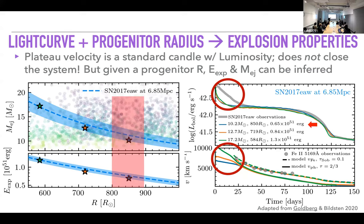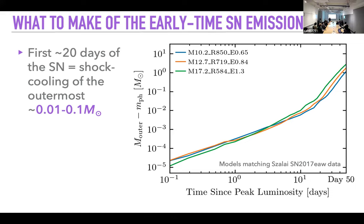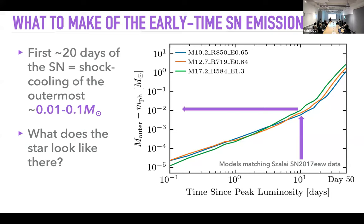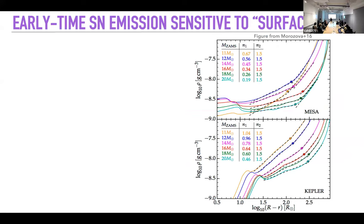Another piece of the puzzle: when we look at observations, there's often an early excess in the luminosity compared to what models predict. The first 20 days of the supernova come from shock cooling of really the outermost 0.01 to 0.1 solar masses of the star — this outer fluff. At day 10, that's 0.01 solar masses while the envelope is about 10 solar masses, so it's a very small fraction.